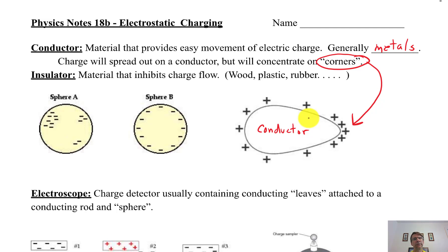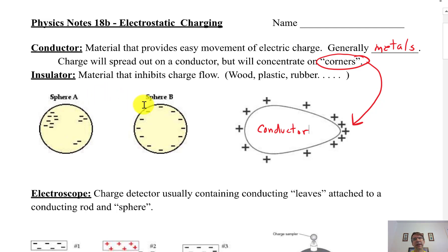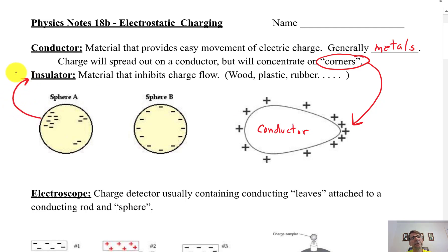An insulator is a material that inhibits charge flow. The charge can get stuck on there but stays localized. Basically anything that's not metal — good examples are wood, plastic, rubber, and glass. Sphere A here is an insulator. The charge could be like a balloon that you rub in your hair — you rub it in three different places and the electrons get stuck there.